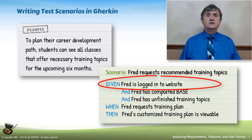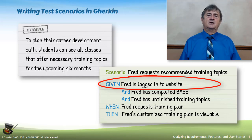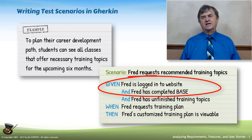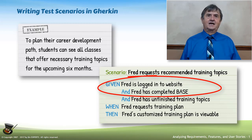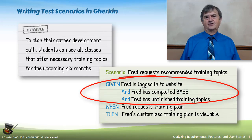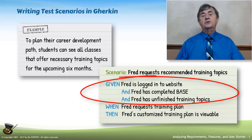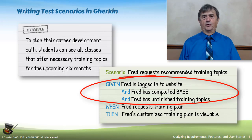Given: Fred, our student, is logged into the website. And Fred has completed BASE — a Business Analysis Skills Evaluation — and Fred has unfinished training topics. So we've set up three conditions. The Given says, and when Cucumber interprets this, it's going to establish these as its starting point.